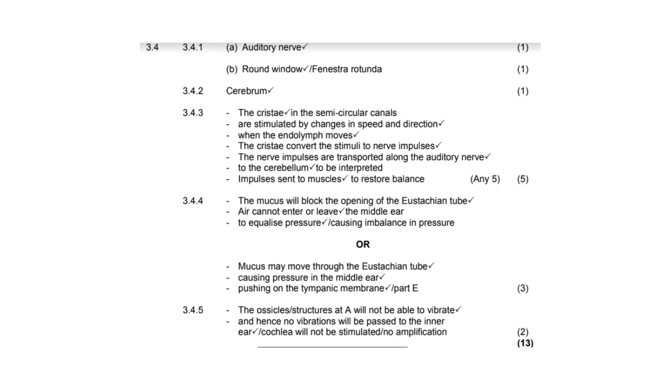Now, here is the memo for you to go over and familiarize yourself with. I suggest paying close attention to this one over here, 3.4.3. This is a perfect memo answer of how to describe how we maintain balance, keeping in mind that we must always remember to mention the receptor, the change in the stimulus, what's stimulating the receptor, and then ultimately how the nerve impulses are sent along the auditory nerve to the cerebellum and how our muscles restore balance.